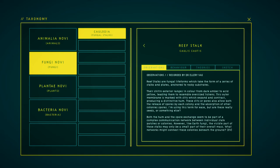Reef stalks are fungal life forms which take the form of a series of stalks and plates anchored to rocky substrates. Their ridged exterior ranges in color from dark amber to acid yellow, leading them to resemble oversized lichen. This outer membrane is marked with slits which expand and contract, producing a distinctive hum. These slits or pores also allow both the release of spores by each colony and the absorption of other colony spores. I am using spore for ease, but are these releases or something else? Both the hum and the spore activity seem to be part of a complex communication network between individual stalks, patches or colonies. However, like Earth fungi, the visible part of the stalks may only be a small part of their overall mass. What networks may connect these stalks beneath them?